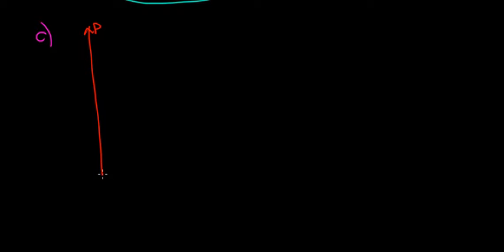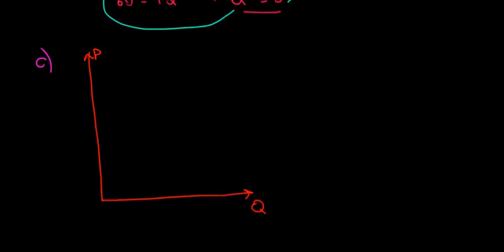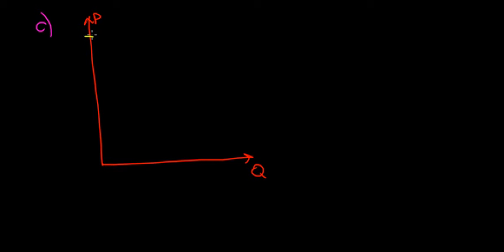We have in part C the price and quantity function. We have the price and quantity graph. We need the demand side and the supply side. The demand side was 120 minus 2q. So 120 is going to be our price intercept and negative 2 is going to be our slope — pretty steep. The Q intercept is going to be 60. That's our demand.